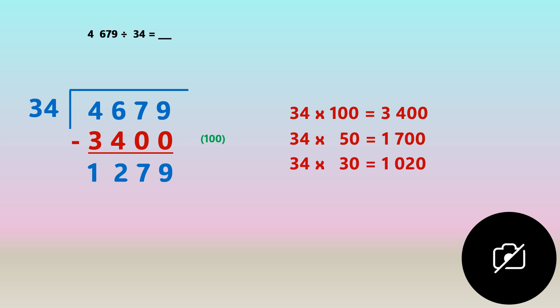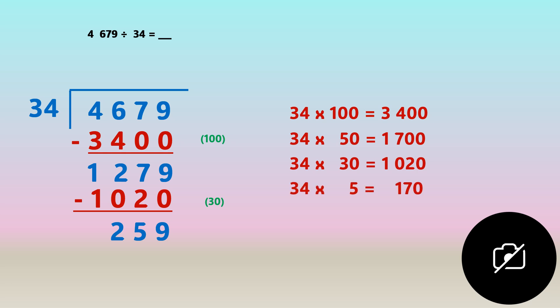One thousand and twenty is pretty close. We subtract it from that number and write on the side that it goes thirty times. We get an answer of two hundred and fifty nine. We can't use tens anymore because this is quite small. So we try seven — actually let's try five first. Thirty four times five gives one hundred and seventy, but one hundred and seventy is too little. So we go a little bit higher.